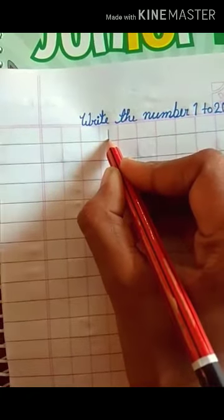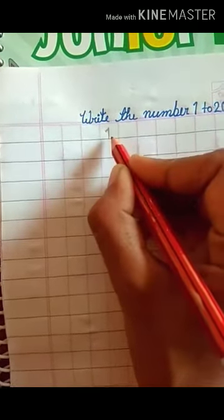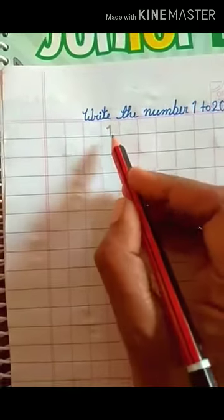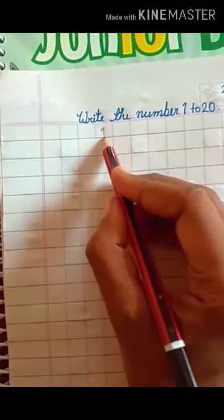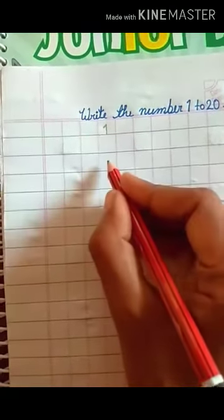Draw standing line, then draw slanting line. This is number 1.